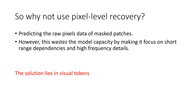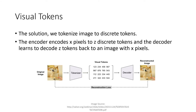The solution lies in visual tokens. We tokenize the image to discrete tokens using a discrete variational autoencoder. We take our original image and transform it into a matrix of N dimensions of discrete visual tokens, and then we have a decoder which decodes back the image. We map X pixels of an image to Z discrete tokens according to a visual codebook, also called a tokenizer, and the decoder learns to reconstruct the input image X based on the visual token Z. Reconstruction loss is used to train the decoder.